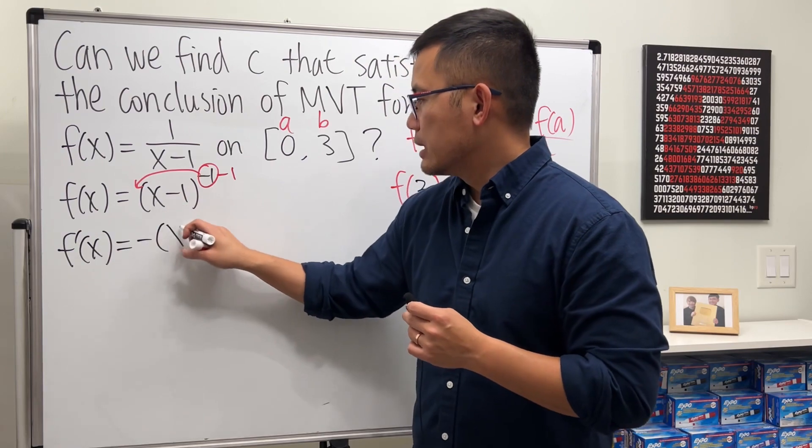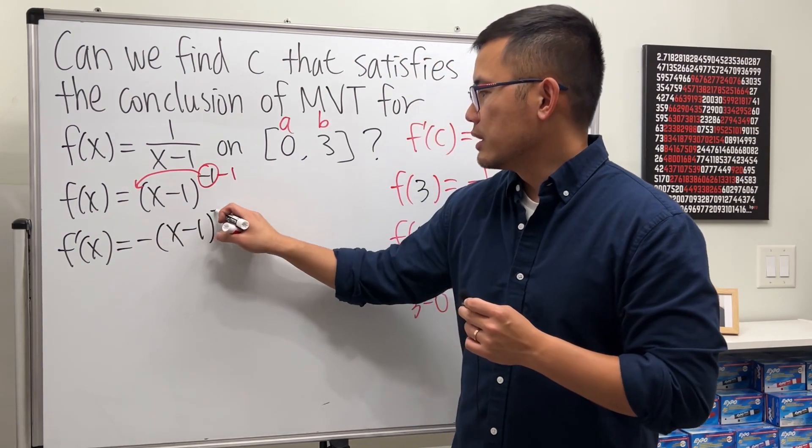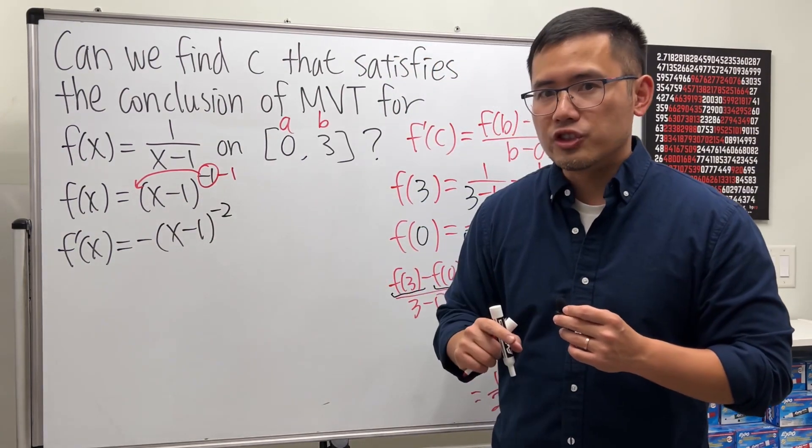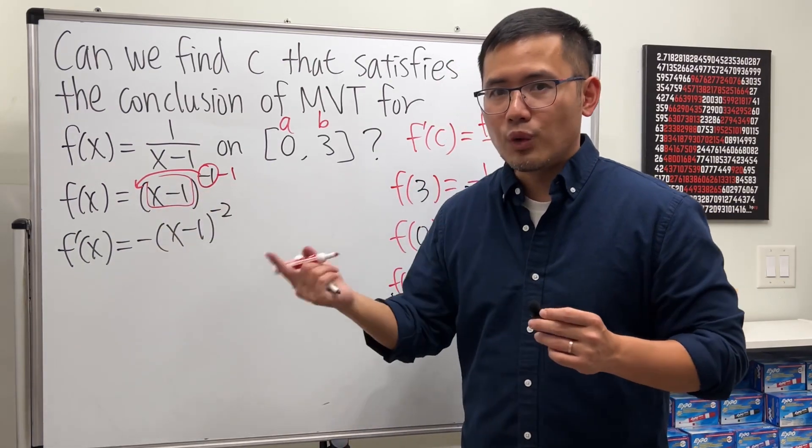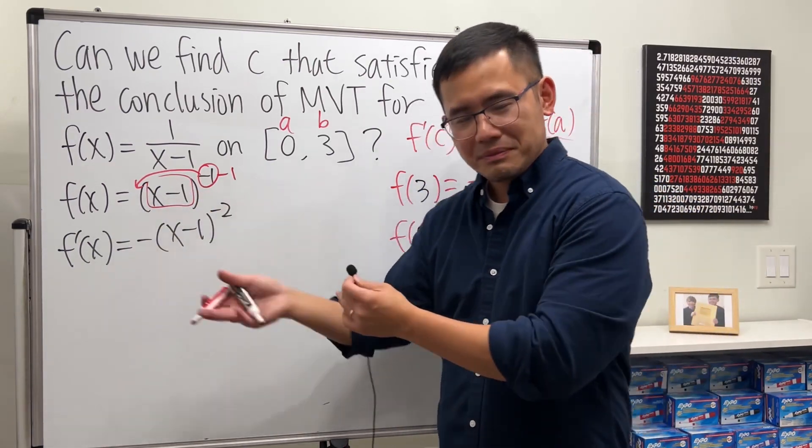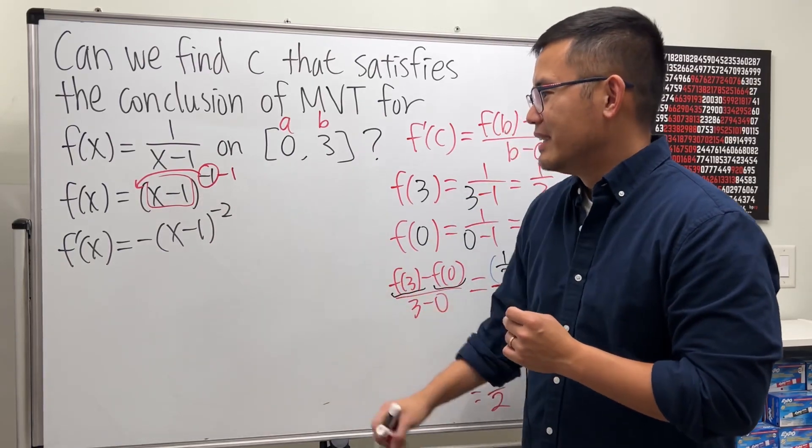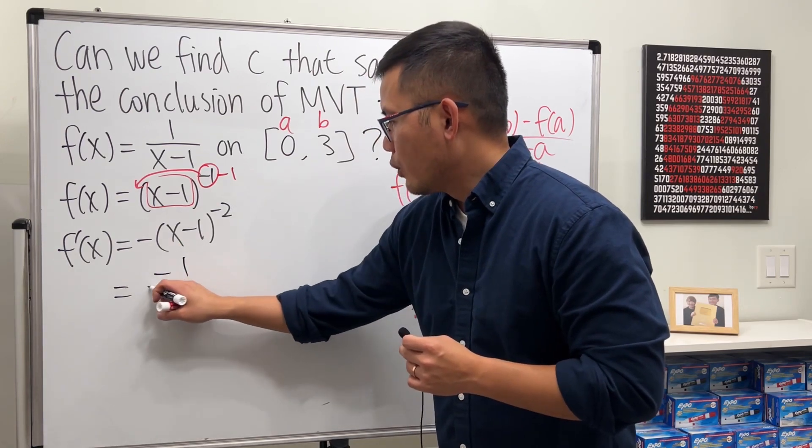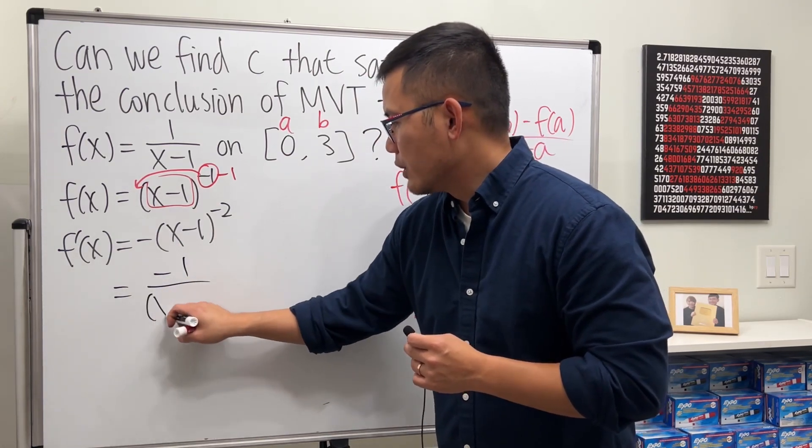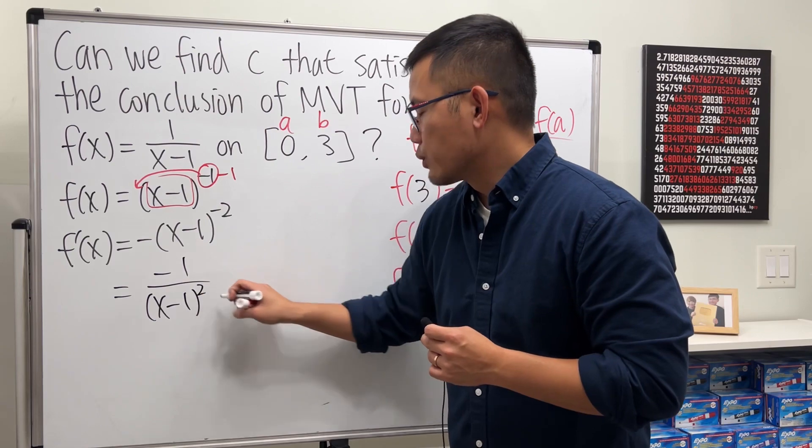And then we have x minus 1 raised to the negative 2. And don't forget the chain rule. What's the derivative of x minus 1? It's 1. So in fact, if you forget, it's okay for this case. But anyway, this right here is equal to negative 1 over x minus 1 squared.